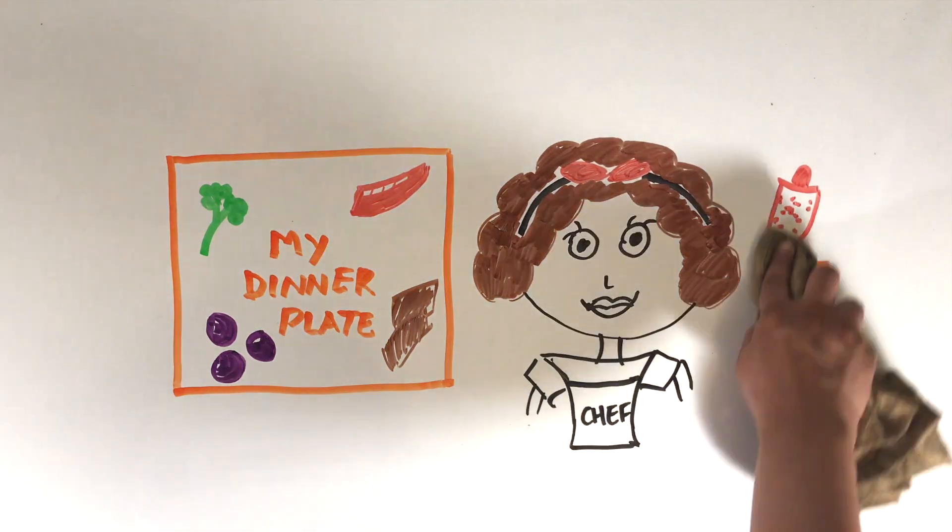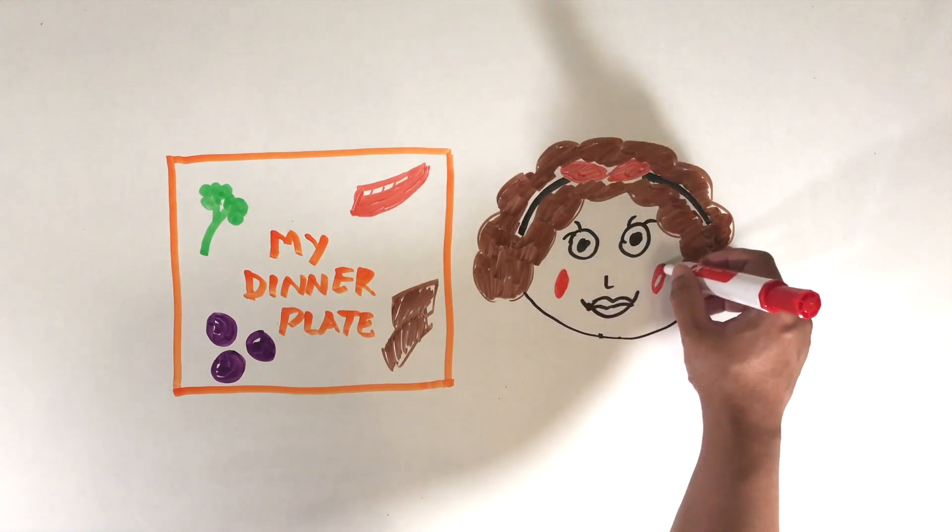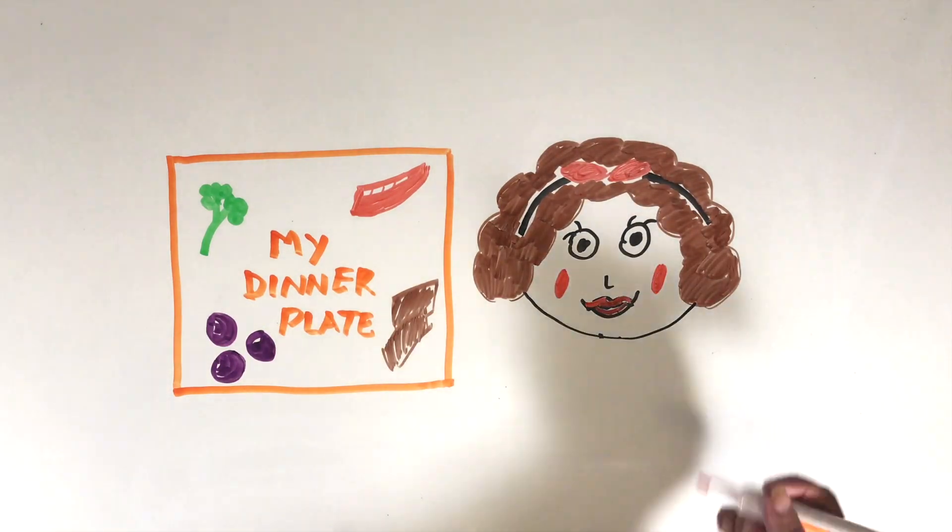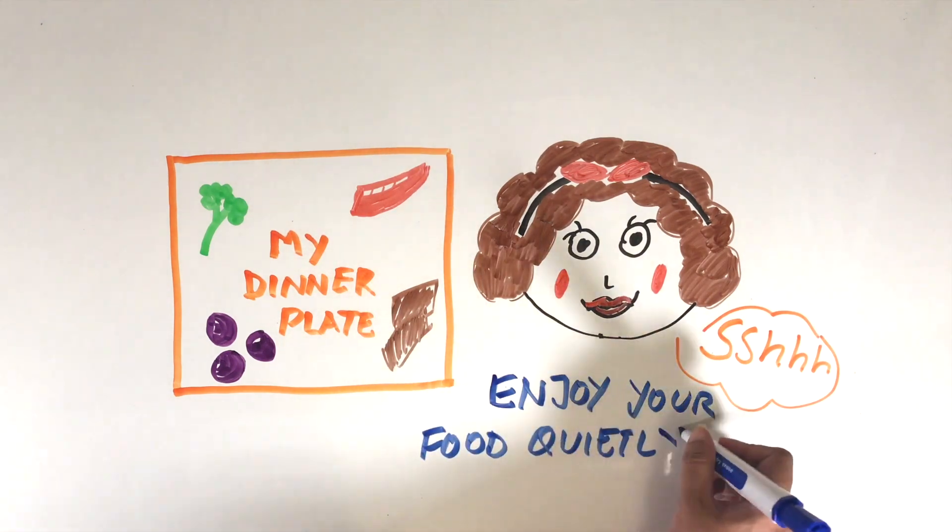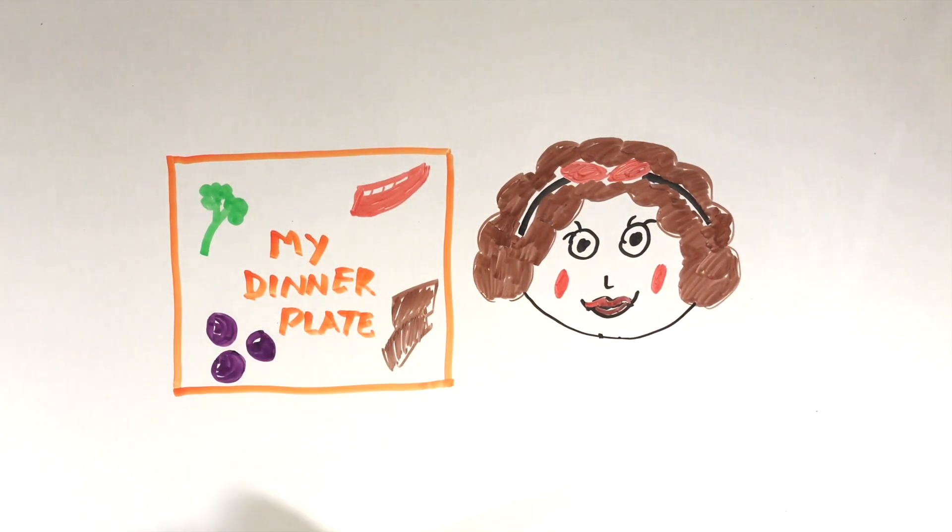We should also develop the habit of eating silently without talking so much. When we eat quietly, we're more likely to savor every bite of the food. If you're talking too much while eating, that's another form of distracted eating.